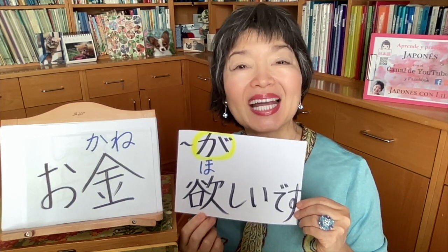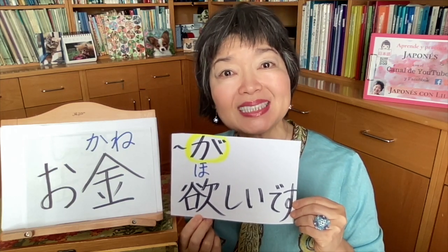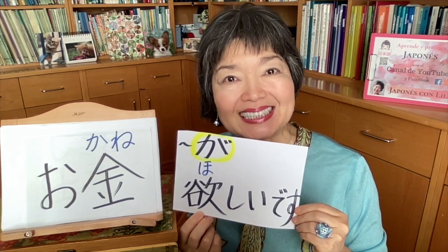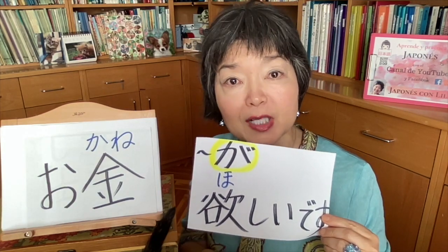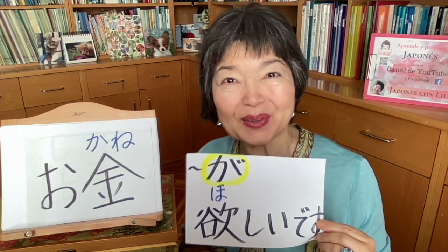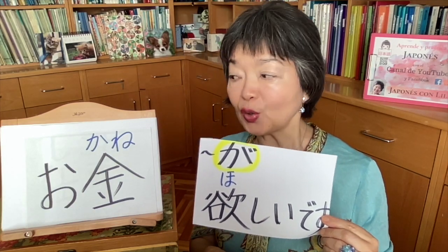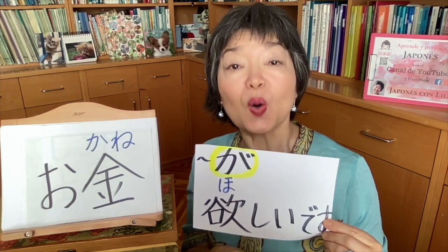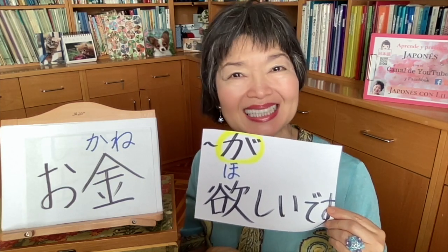If I want lots of money: お金 が たくさん ほしいです. If I want a little bit: お金 が すこし ほしいです. And if I want to ask 'how much money do you want?' I can say: お金 が どのぐらい ほしいですか? — using どのぐらい (donogurai) for 'how much/how many.'